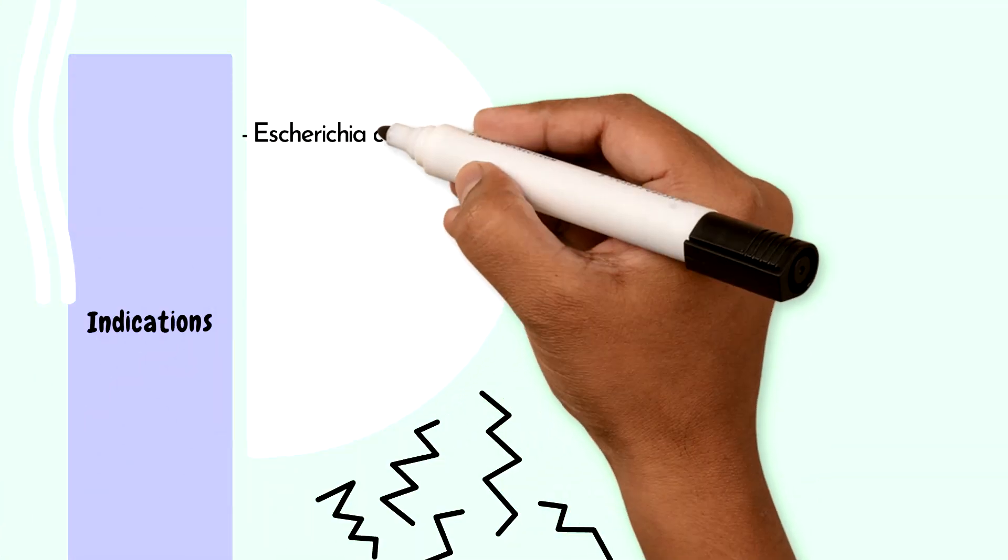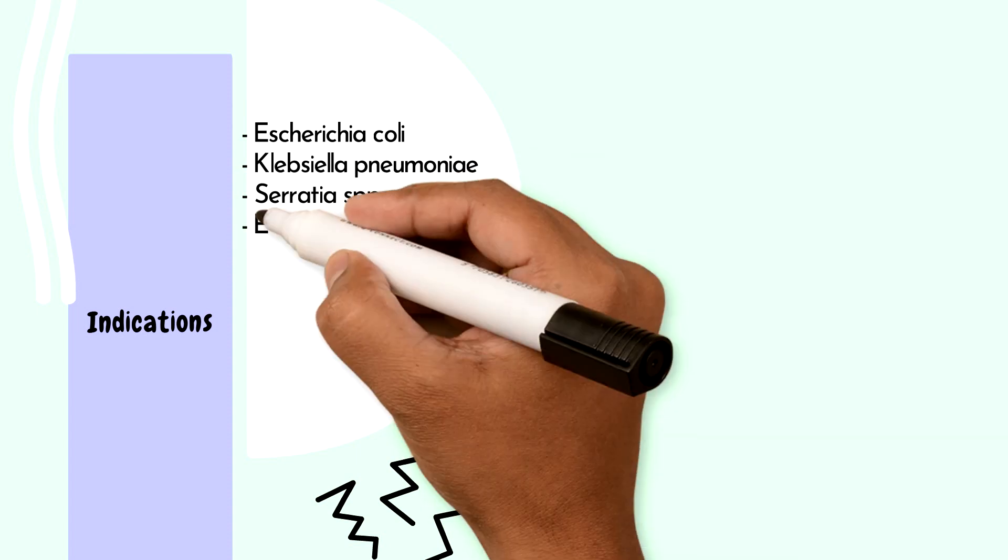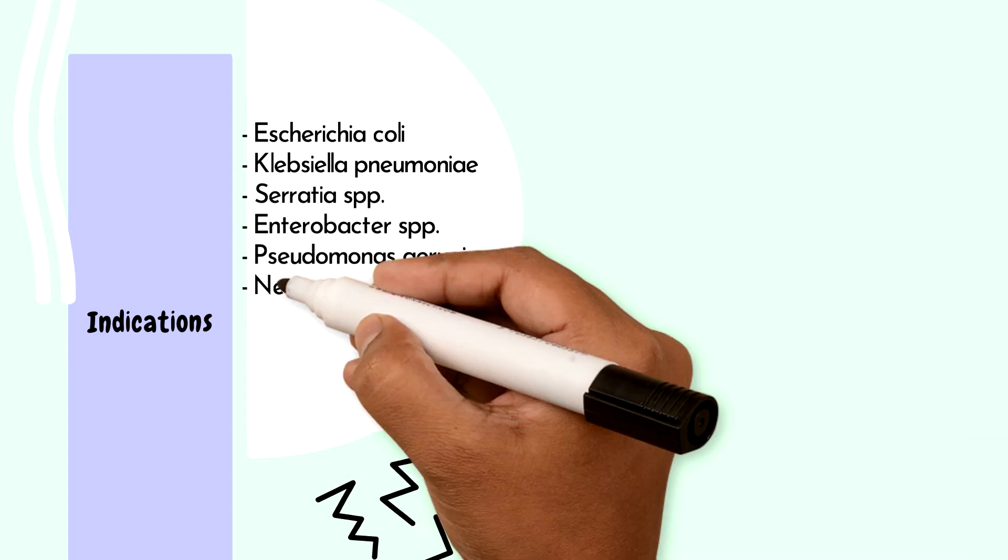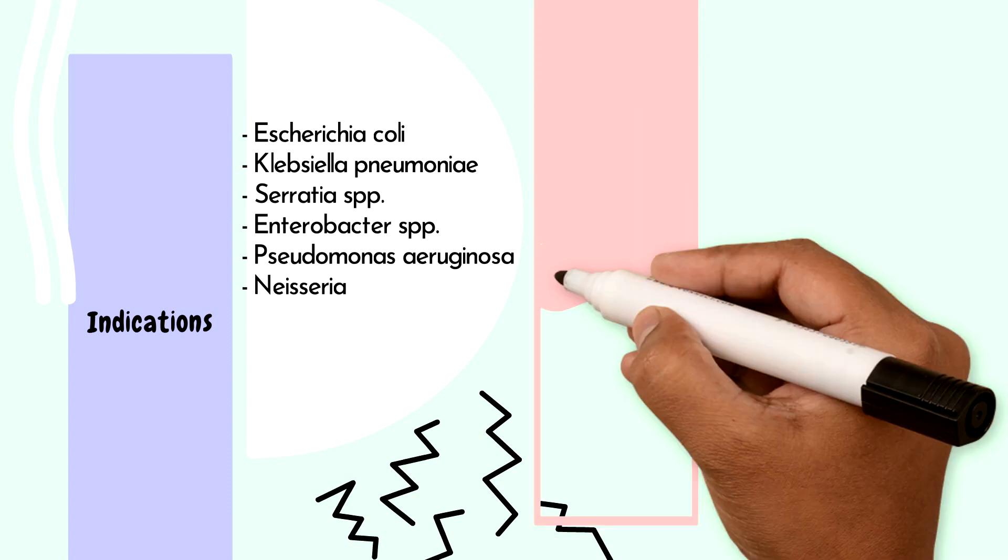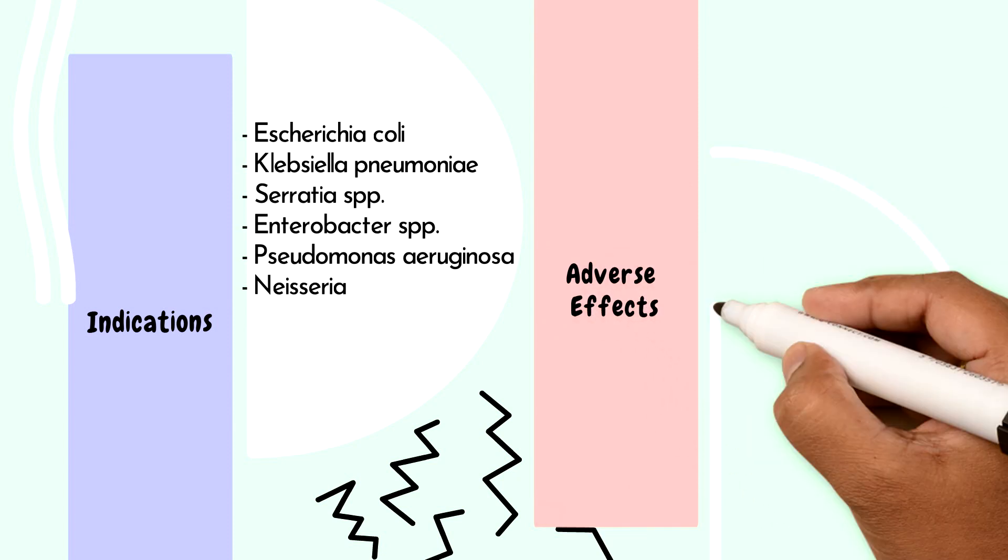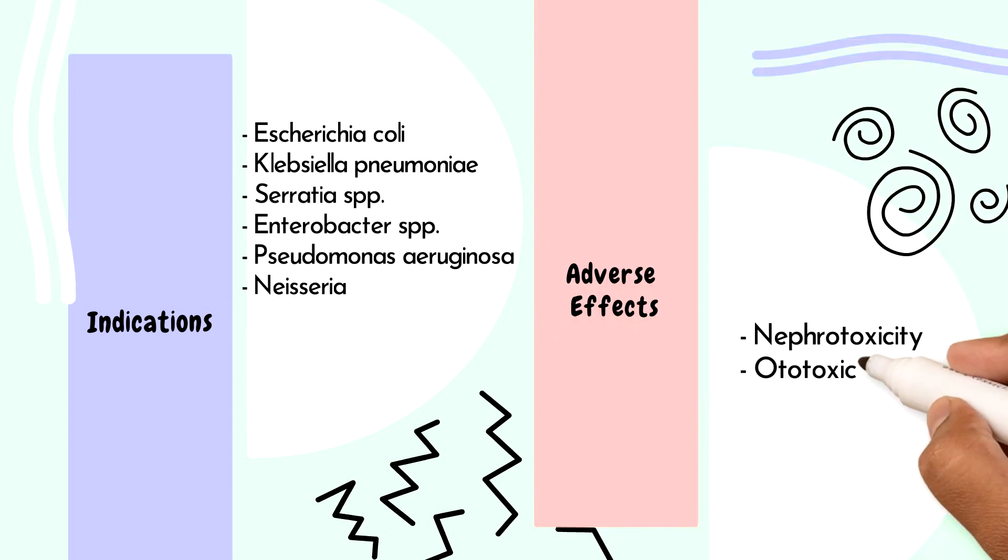Indications of gentamicin: Gentamicin is most commonly used for the microorganisms of the Enterobacteriaceae family, including E. coli, Klebsiella pneumoniae, Serratia species, Enterobacter species. Also effective against Pseudomonas aeruginosa and some strains of Neisseria.